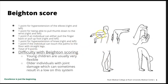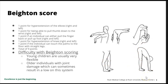You get a point for right or left hyperextension of the elbow, being able to pull the thumb down to the wrist without a lot of tension — a point for right and left — pulling the fingers back, a point for right and left, hyperextension of the knees, and being able to bend over and touch the palm to the floor.